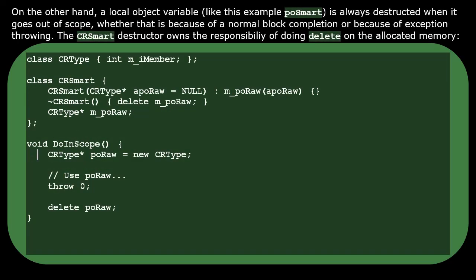On the other hand, a local object variable is always destructed when it goes out of scope, whether that is because of a normal block completion or because of exception throwing. The destructor owns the responsibility of doing delete on the allocated memory.